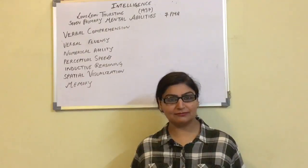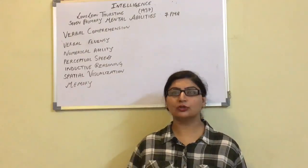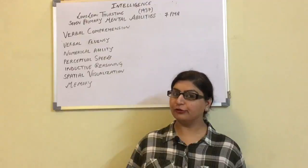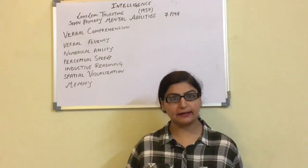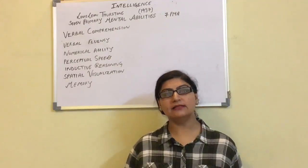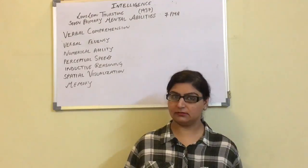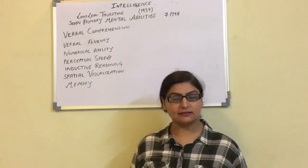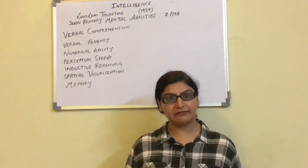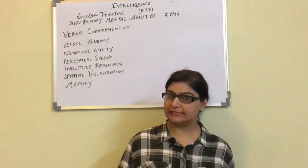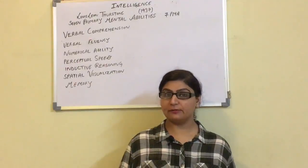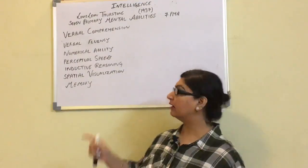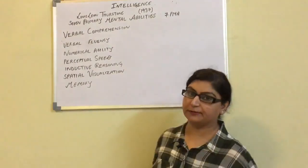Hello everyone. The topic for today is the Theory of Intelligence given by L. Thurston. His full name is Louis Leon Thurston. He gave his theory of intelligence called 7 Primary Mental Abilities in the year 1937.